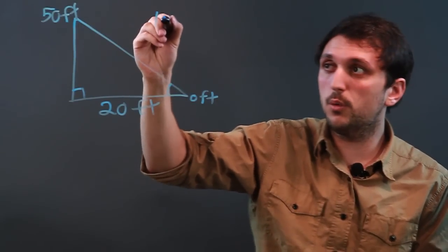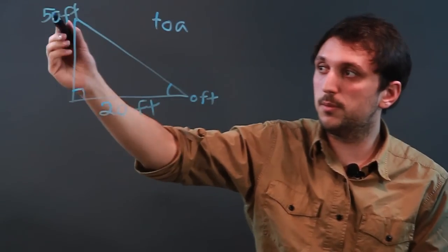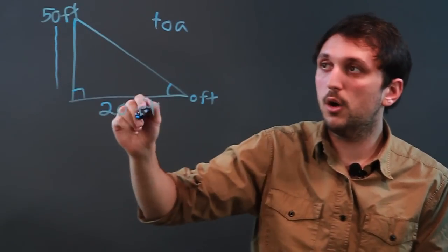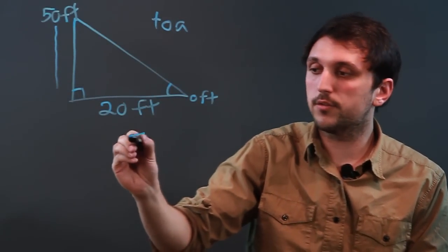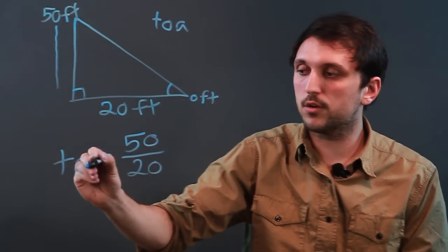And remember, SOH CAH TOA, so we have TOA, because we have the opposite, which is going to be 50 feet, over the adjacent, which is 20 feet. So we're going to say 50 over 20, and we're going to say it's the inverse tangent.